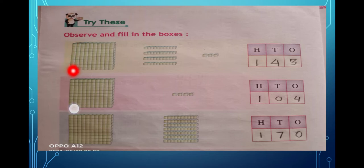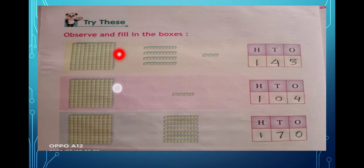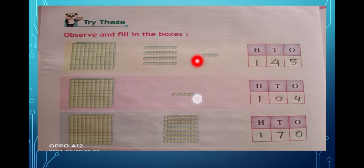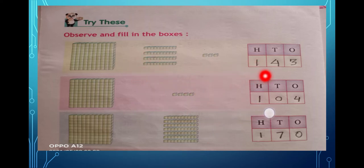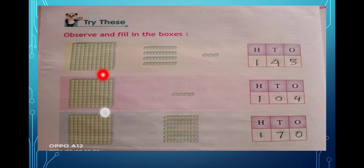Ten tens make one hundred. Counting one through ten — all together ten tens makes one hundred. Here there are four tens and three ones, so I wrote four in the tens place and three in the ones place. This group of ten tens also means one hundred.